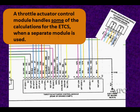A throttle actuator control module handles some of the calculations when the separate module is used. These are going to do the actual positioning of the motor and the feedback from the motor. The amount of throttle opening is still going to be determined by the PCM — it's going to set the throttle opening. Then this module is going to receive that communications and then run the motor, get the feedback, and position it to the requested value as established by the PCM.